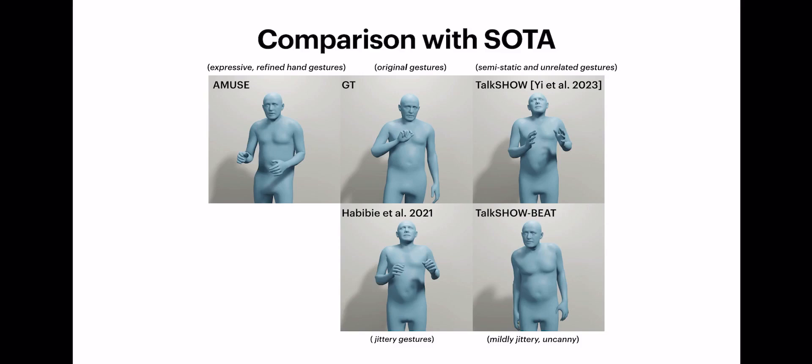To evaluate Amuse, we compare it with recorded reference sequences referred to as ground truth and to state-of-the-art simple model-based methods. Compared to these methods, our generated gestures are better synchronized with the speech rhythm and they better represent the emotion of the input speech sequence.